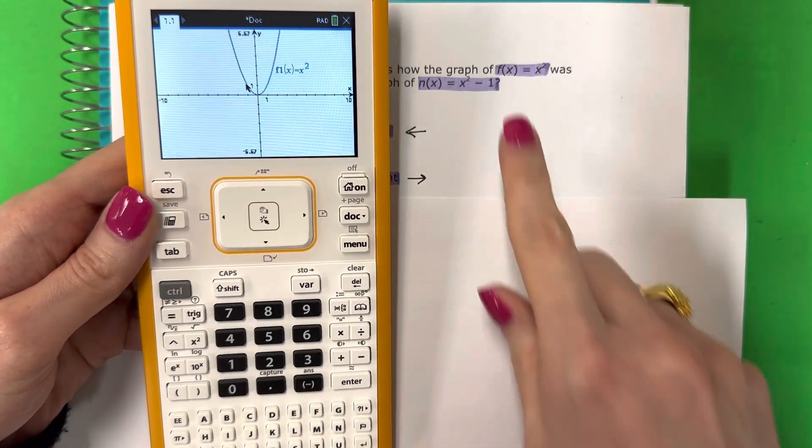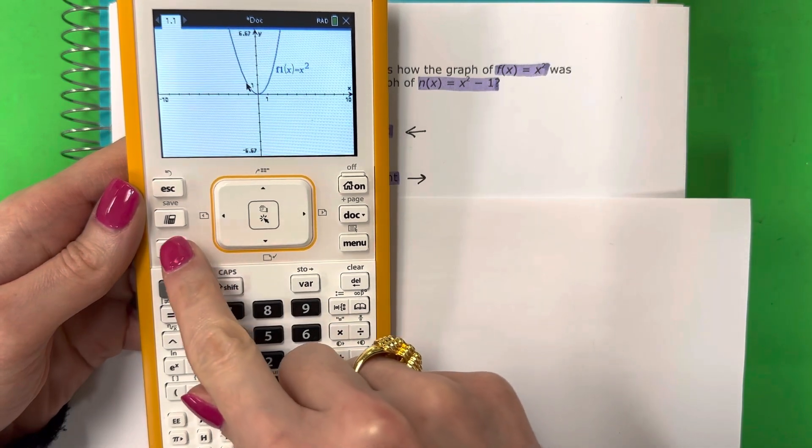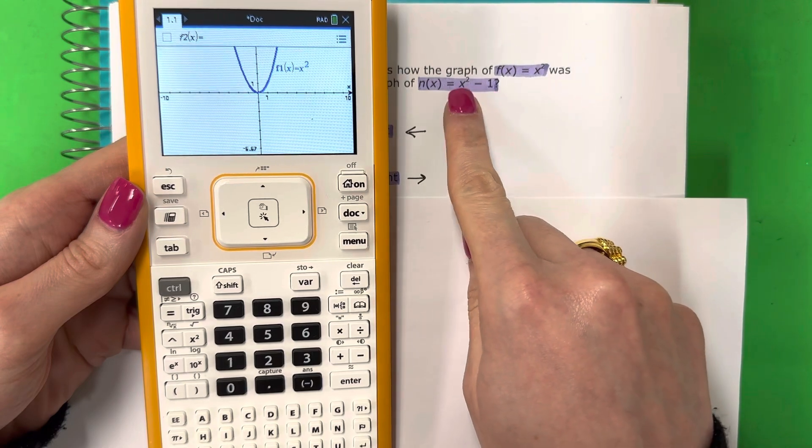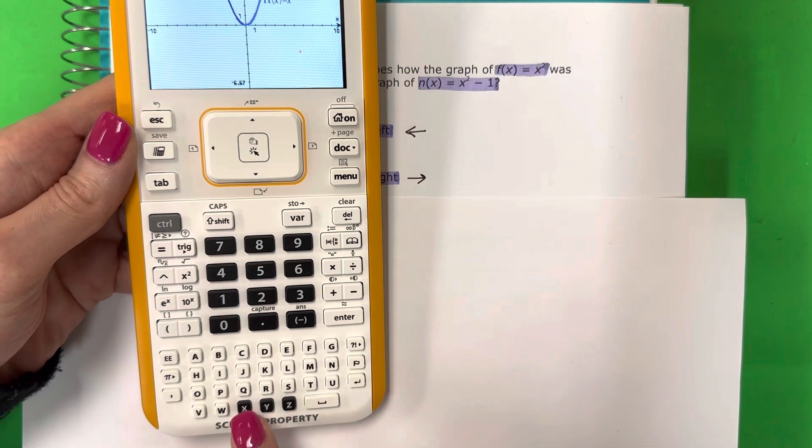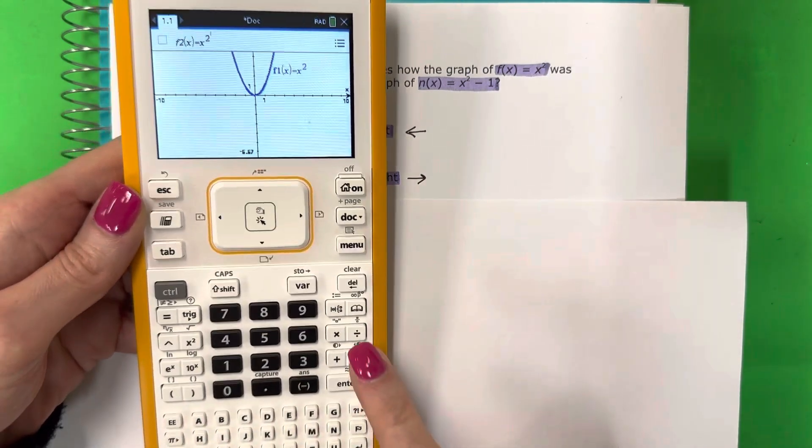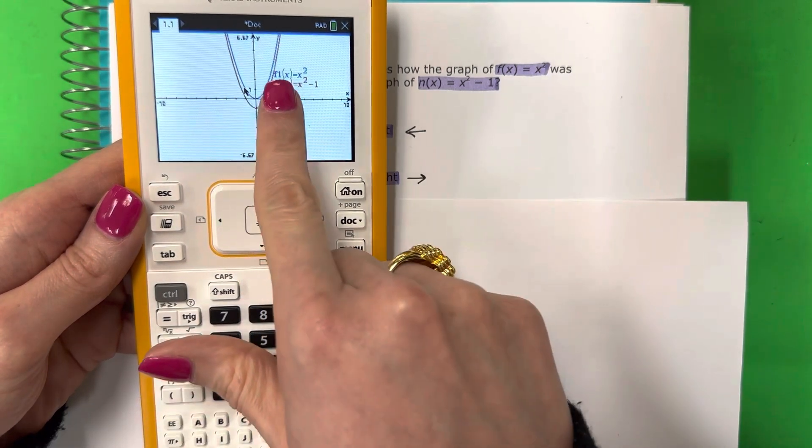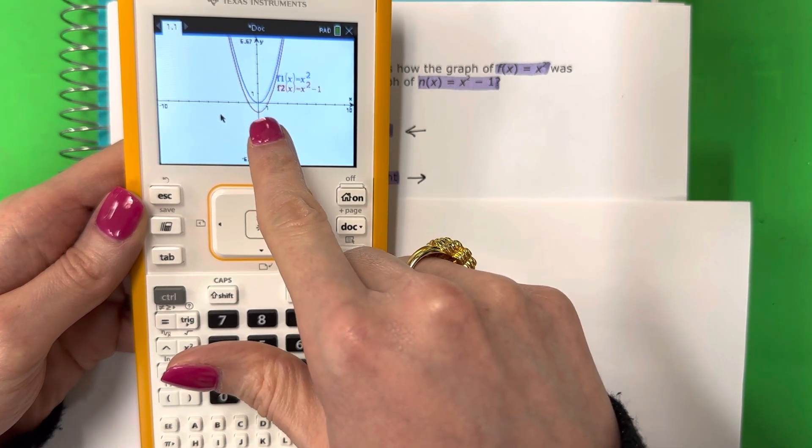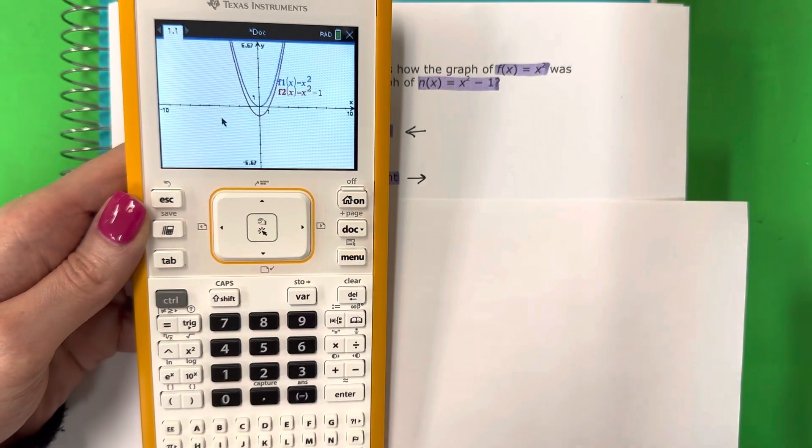Now we're going to go ahead and put this on top of it. Vamos a poner este sobre. Okay, so go ahead and push tab. Presiona el botón tab. And we're going to put the second one, which is x squared minus 1. Es x cuadrado menos 1. So x² - 1. Push enter. Okay, so this is the new one. El nuevo es el rojo. So the original is blue. El original es azul. And the new one is red. Y el nuevo es rojo.